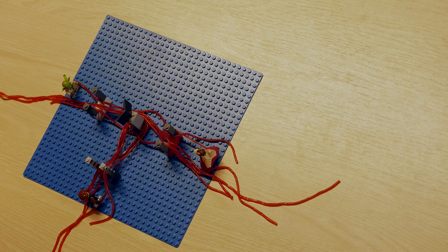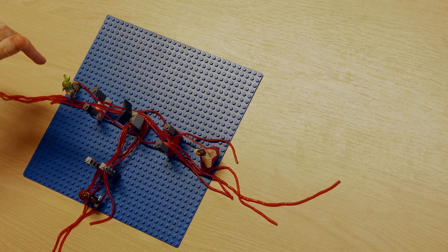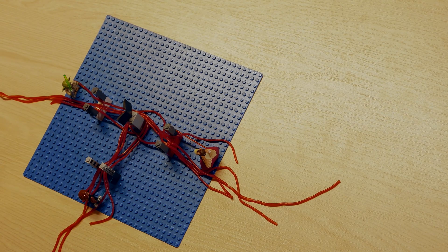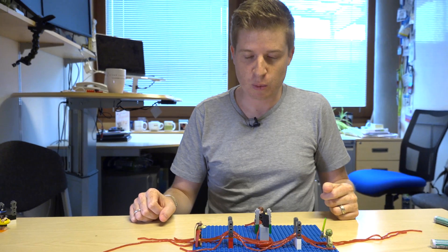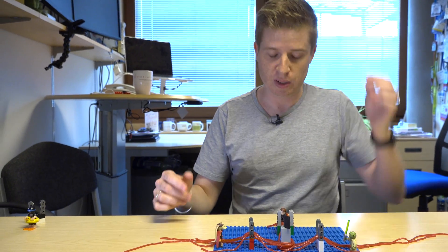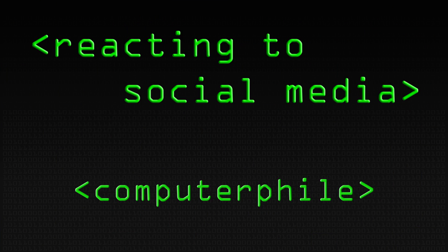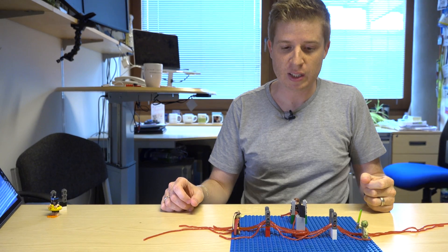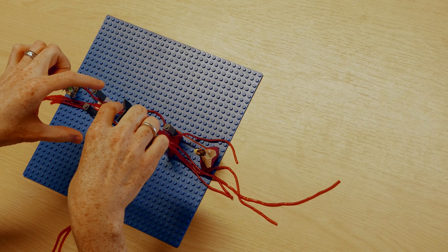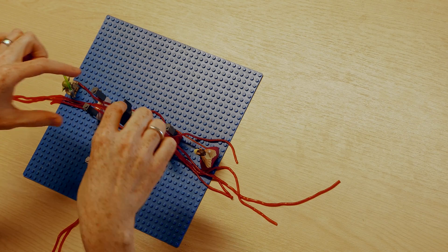We've just done a video on feedback and feedthrough and we had this board layout helping to explain the difference. In the last video we had a Google Doc as the artifact, a user interface, and multiple users. Let's quickly connect that to Twitter and Facebook. For Twitter, the artifact in the middle is a tweet — something that people produce and then look at through different user interfaces: phone, browser, or whatever.